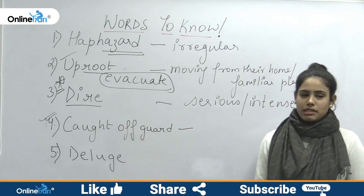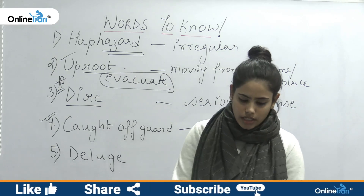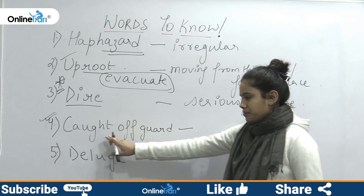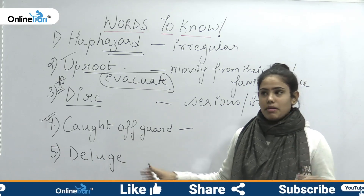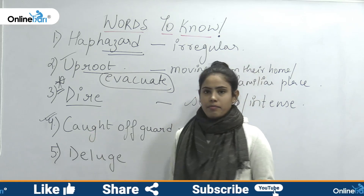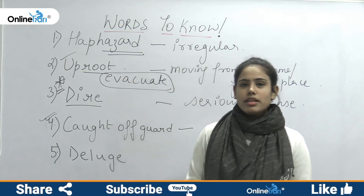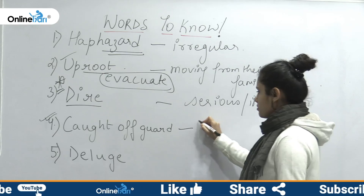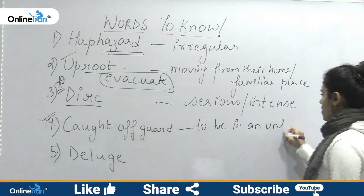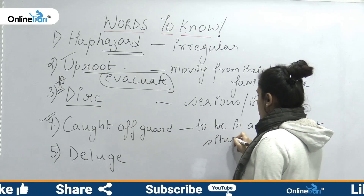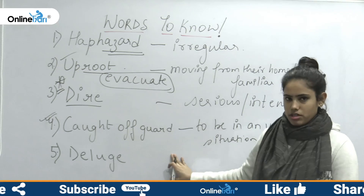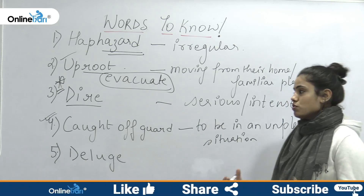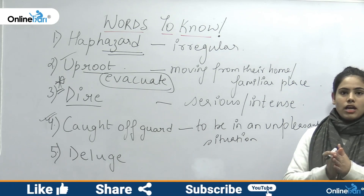Now, caught off guard. Let's see — this phrase means... you all comment and tell me what the meaning of caught off guard is. If you know, explain it and tell me in the comments. Students, caught off guard. If you're off guard, you're not on guard — meaning you've been taken by surprise. Caught off guard means to be in an unexpected or unpleasant situation, to be in an irregular situation.